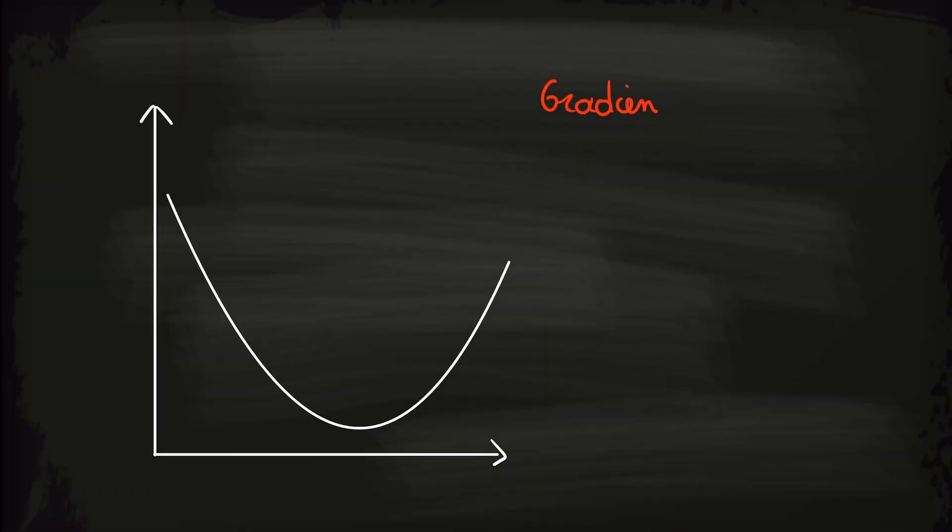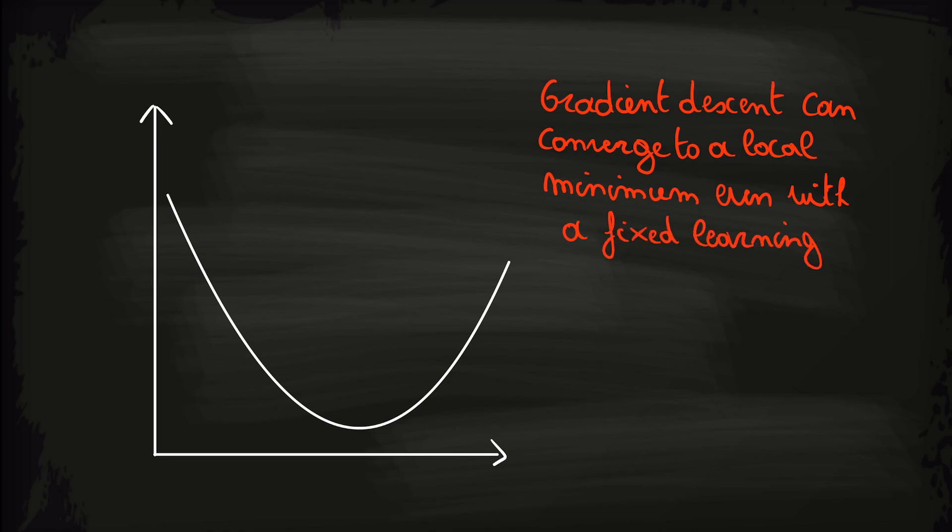What this concretely means is that gradient descent can converge to a local minimum, even with the learning rate fixed. So as we approach the minimum, gradient descent will take automatically smaller steps and we don't need to decrease alpha over time.